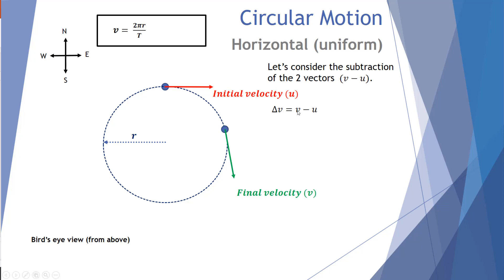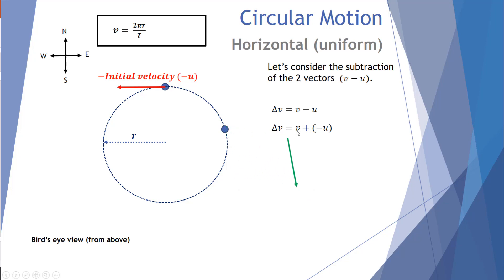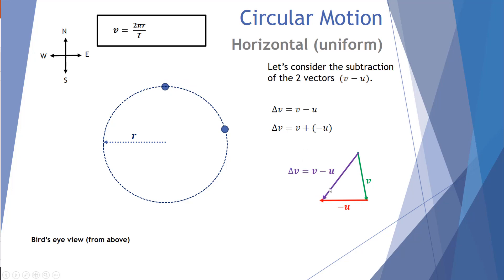The change in velocity is the final minus the initial. You can't simply subtract vectors, but what we can do is add the negative of the initial velocity. The initial velocity moving to the right becomes negative — moving to the left. To find the change in velocity, we take v and add the negative of u, which is effectively v minus u. We draw them tail to head, and the resultant vector goes from the initial tail to the final head.